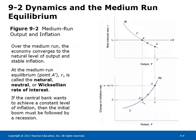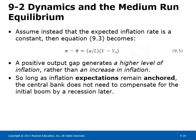R_N is called the natural, neutral, or Wicksellian rate of interest — the rate at which the economy is at the potential level of output. Equation 9.5 shows the Phillips curve if we assume expected inflation is constant, so a positive output gap generates a higher level of inflation rather than an increase in inflation. So long as inflation expectations remain anchored, the central bank does not need to compensate for the initial boom by a recession later.